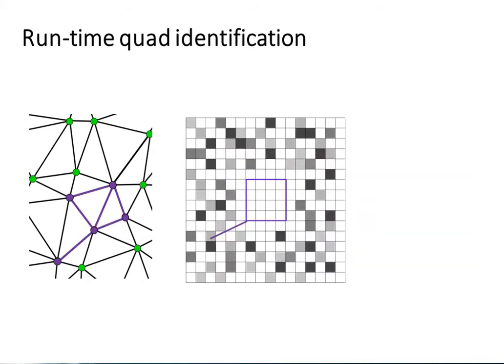Once the lookup table has been constructed for the full emitter dot pattern, the runtime quad identification is extremely fast.